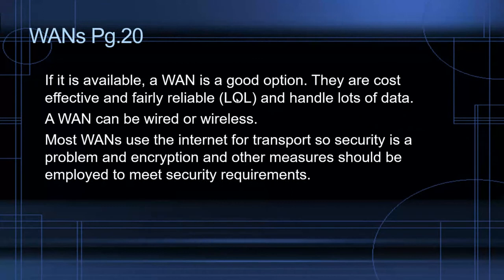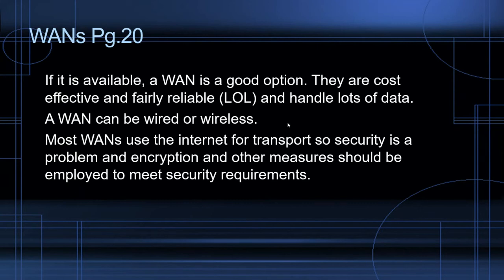WAN (Wide Area Network) is a good option if it's available — cost-effective, fairly reliable, and can handle lots of data. A wide area network can be wired or wireless; your home internet is part of a wide area network. When we're talking about process control, we want as reliable a system as possible. Most WANs use the internet for transport, so security is a concern, addressed through encryption and other security measures.